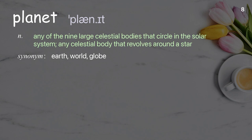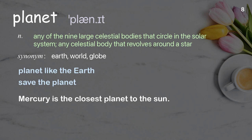Planet: any of the nine large celestial bodies that circle in the solar system, or any celestial body that revolves around a star. Examples: planet like the Earth, save the planet. Mercury is the closest planet to the sun.